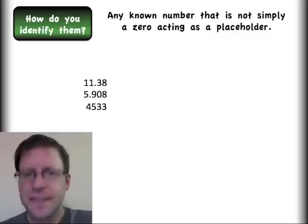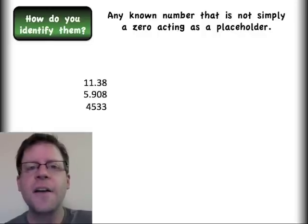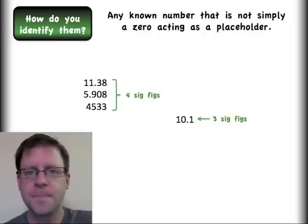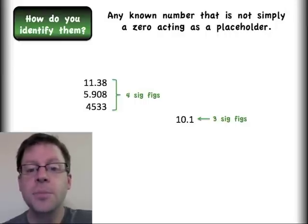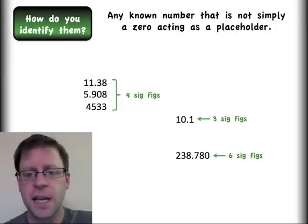Here's three numbers. This is very straightforward. These all have four significant figures. I can put this number down here - that's three significant figures. This one here, that's six significant figures.